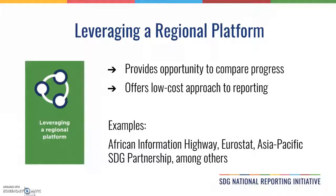Several regional bodies have developed platforms allowing countries to provide and display data on the SDGs, and in some cases compare their progress to other countries in the same region. These platforms provide a number of features such as visualizations to help users explore the data, and the interface makes it easier to compare progress across countries in a region. There is some cost to move the data over to these platforms, but the overall cost is minimal compared to other options. However, countries are limited by the existing resources and functionality of the platforms and don't have the flexibility to modify them according to their needs. There are several examples of these platforms, but today we're going to look at the Africa Information Highway.